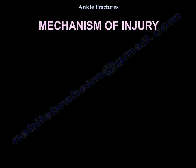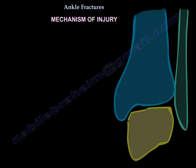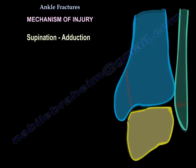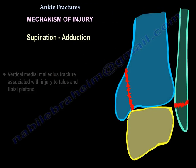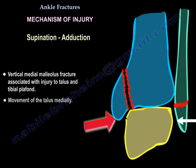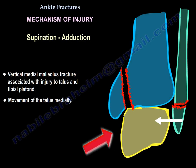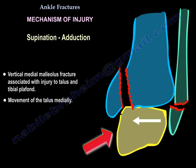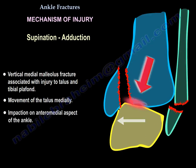Another important point: what is the mechanism of injury? Supination-adduction type 1 produces a vertical fracture of the medial malleolus, with the talus going medially — this is the only ankle fracture where the talus goes medial. There is an impaction on the anteromedial aspect of the ankle.